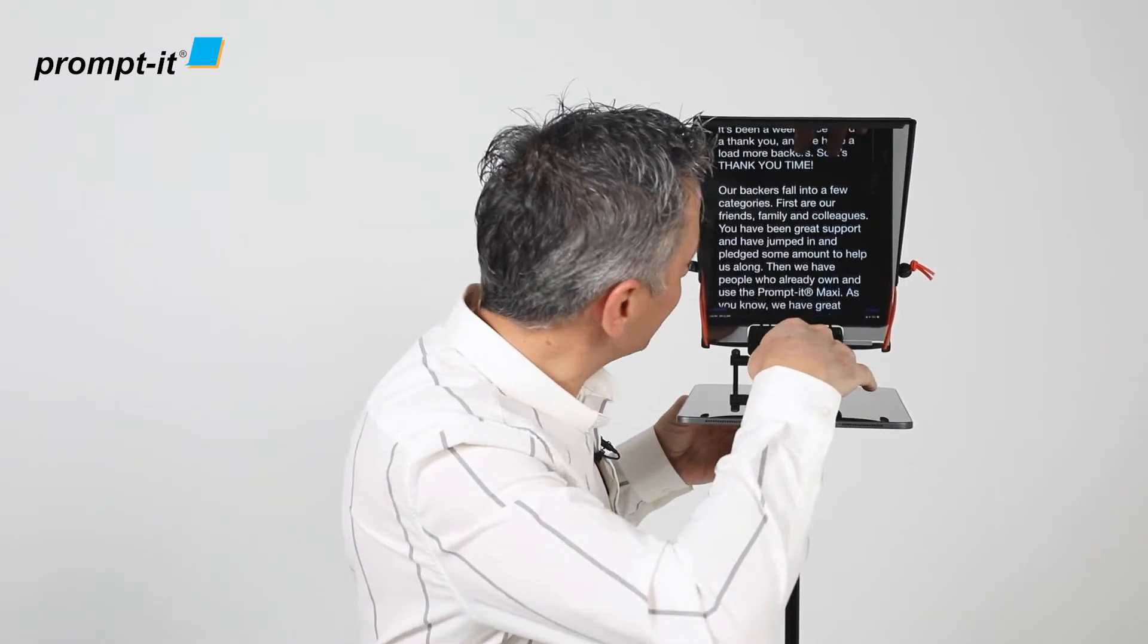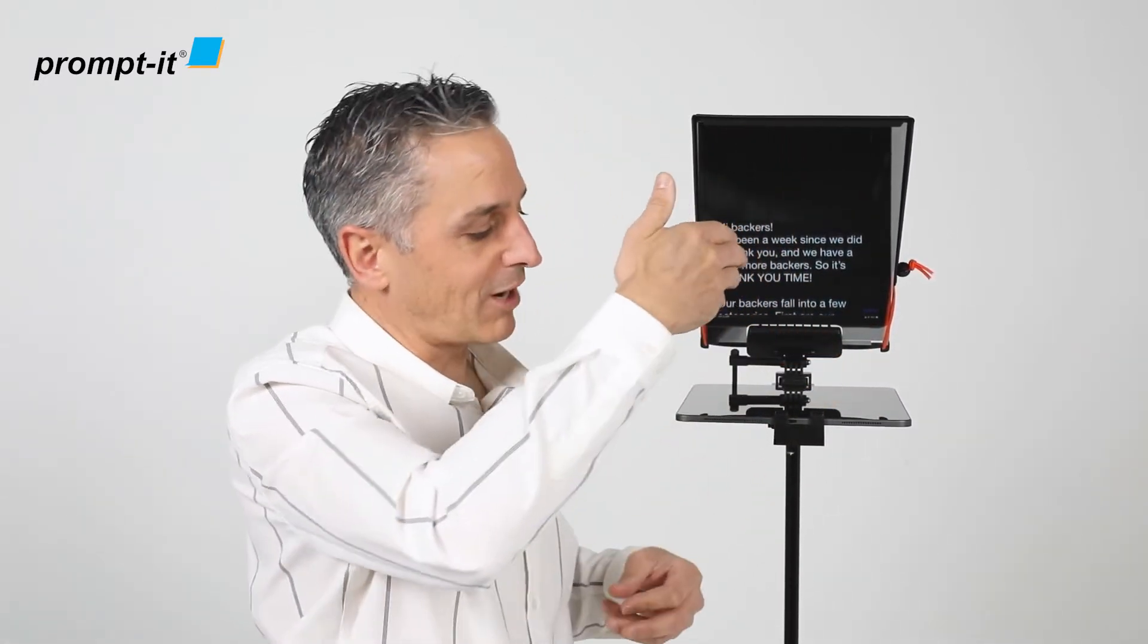So now my text is ready on the Promptit Flex. It's oriented the right way, mirrored the right way, and I'm ready to start. Let's have a look at the remote controller.